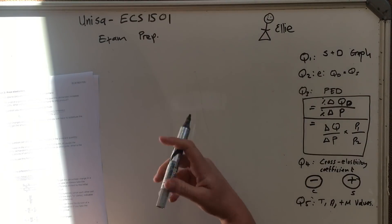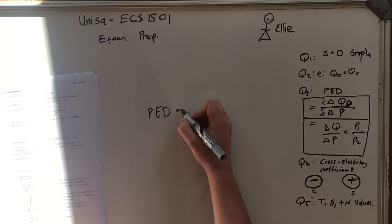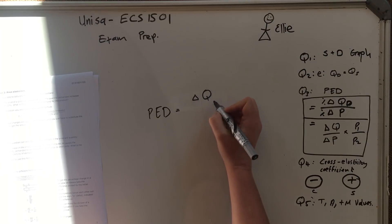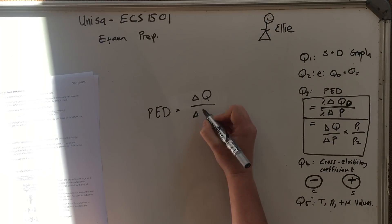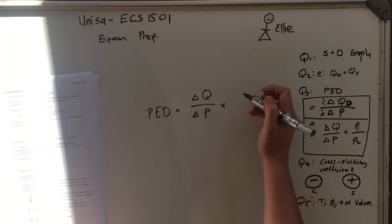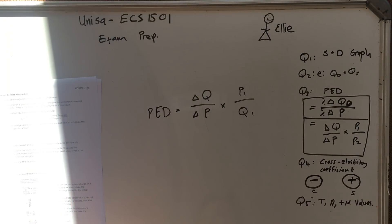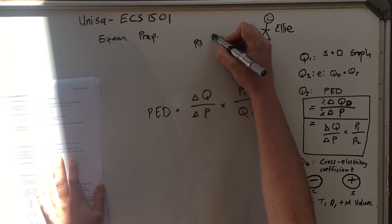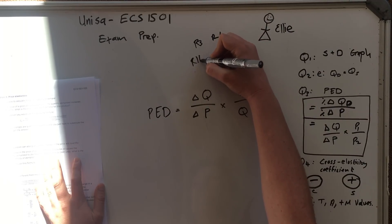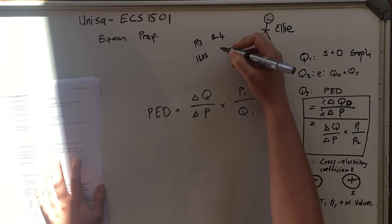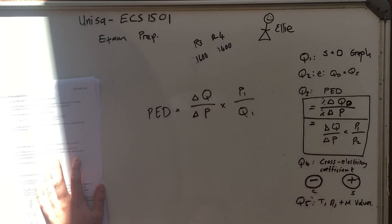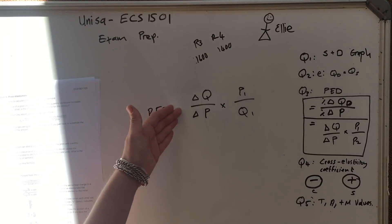If they give you units — like units went from 3 to 5 and price went from 20 to 16 — then price elasticity of demand equals the change in quantity over the change in price, times the first price over the first quantity. It's a formula; just memorize it. In the exam they'll tell you there was an increase in price from R3 to R4, and the units changed from 1,600 to 1,400.